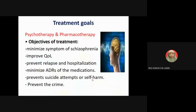The treatment goals for schizophrenia are: to minimize the symptoms and improve quality of life, to prevent relapse and hospitalization, and to minimize the adverse effects of medication. Other objectives include preventing suicide attempts or self-harm, and importantly, preventing criminal behavior.